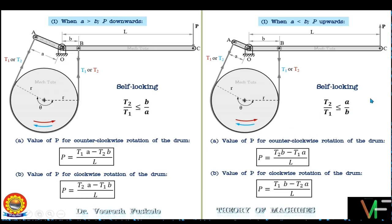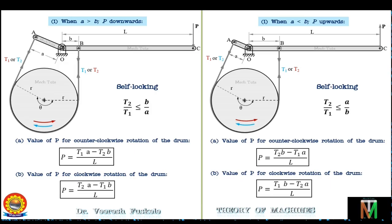Having seen the conditions of self-locking, we should understand where self-locking is required. The advantage of self-locking is taken in hoists and conveyors where motion is permissible only in one direction. If motion gets reversed somehow, self-locking is engaged, which can be released only by reversing the applied force.